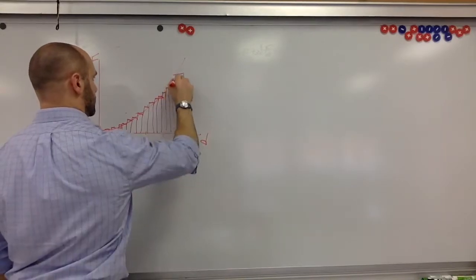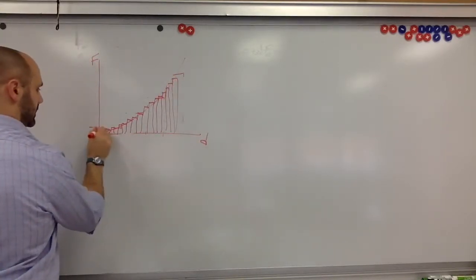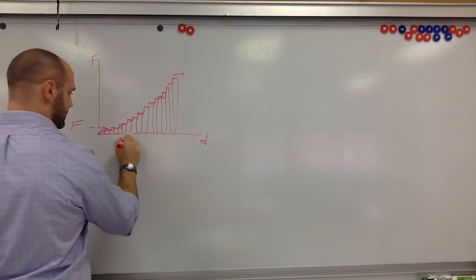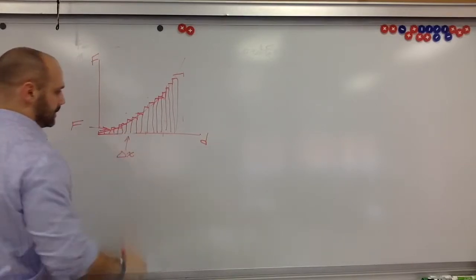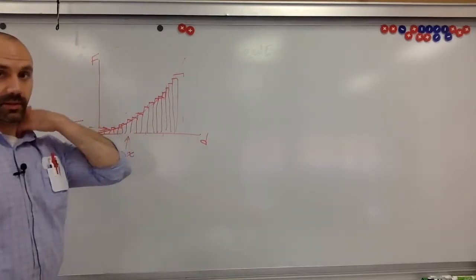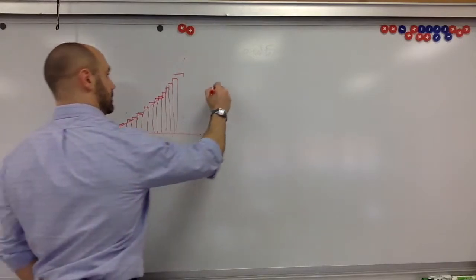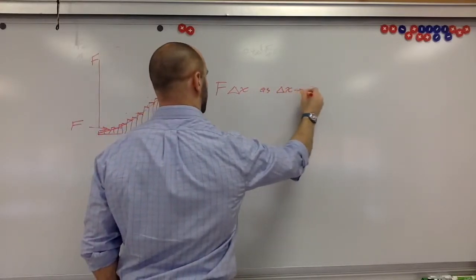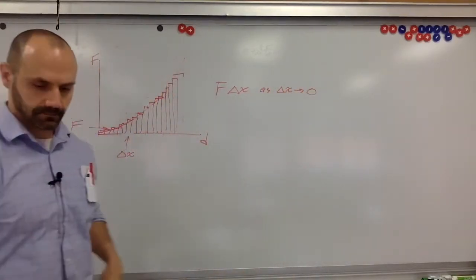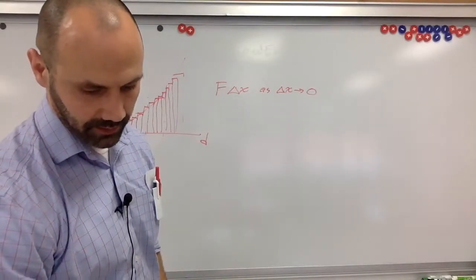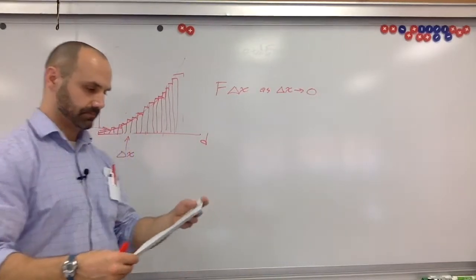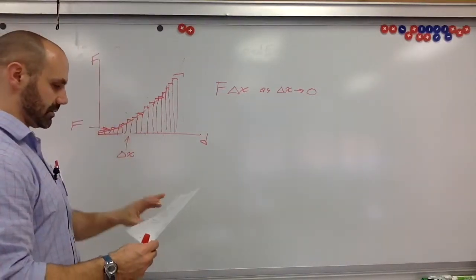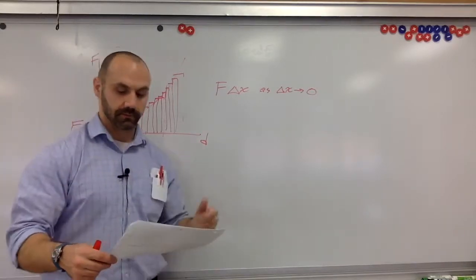Each rectangle has height F(x) — force as a function of displacement — and width Δx. To get the best approximation, we take the limit of the sum of F(x)·Δx as Δx approaches zero. This idea of making the rectangles infinitely thin is the foundation of integration.